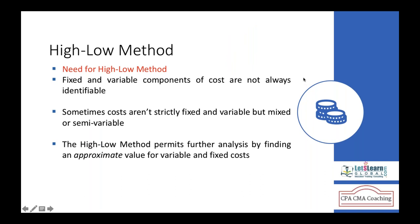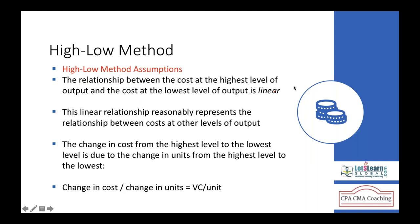What is the need for the high-low method? We have different activity levels and different total costs. When you produce different numbers of units, the cost varies. So we use the high-low method to find out the fixed and variable cost so that we can use it for estimating the future cost at an estimated output, because variable cost varies according to production and fixed costs remain constant.